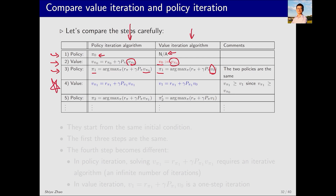How do they become different? For policy iteration, after obtaining pi one, the next task is to obtain v_pi_one by solving the Bellman equation. In contrast, value iteration uses pi one and v zero to get v one, and then uses this v one immediately in the next step. As a result, v one and v_pi_one start to be different from this point onwards. If we continue the process, the new policies and values will also differ. The key difference is between v_pi_one and v one.